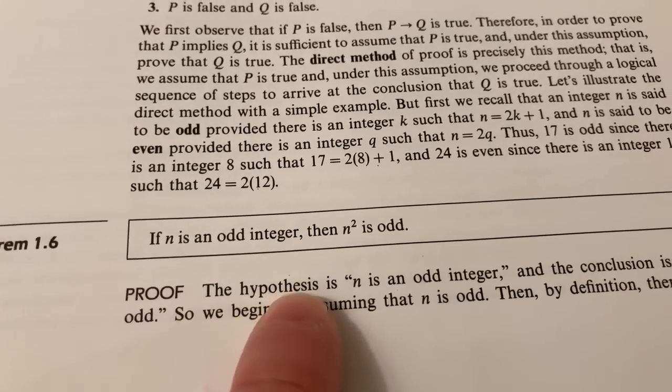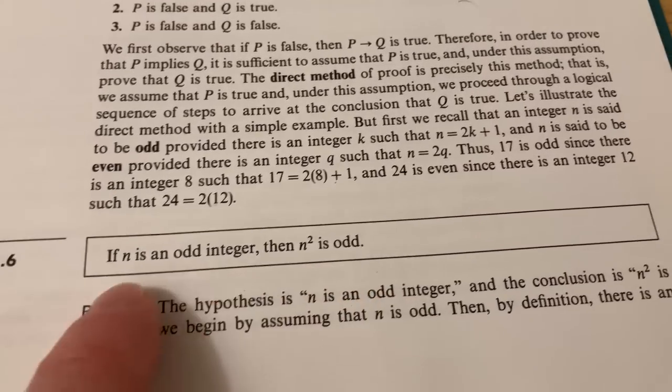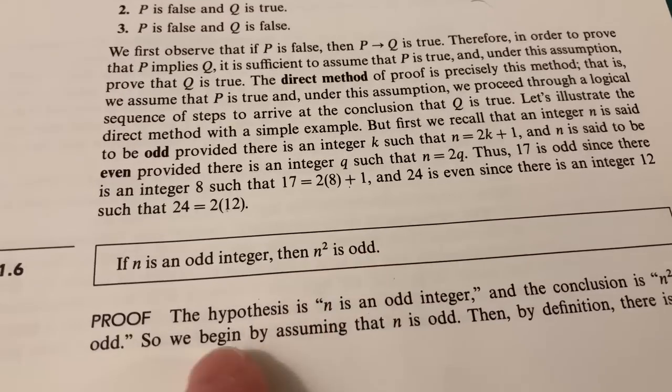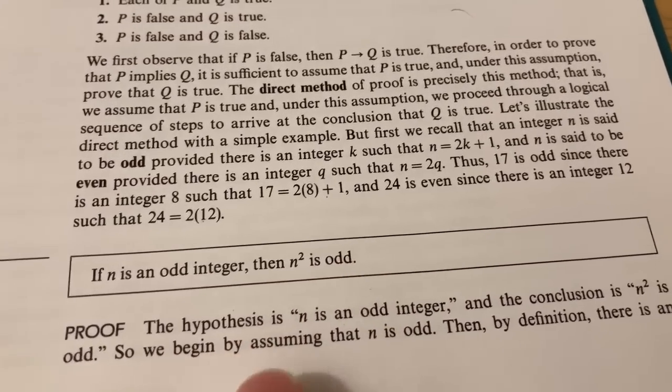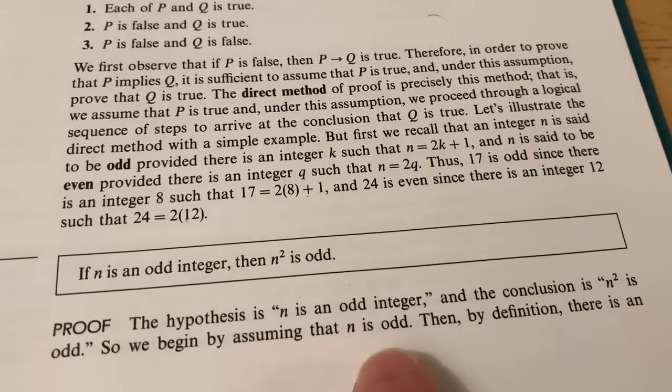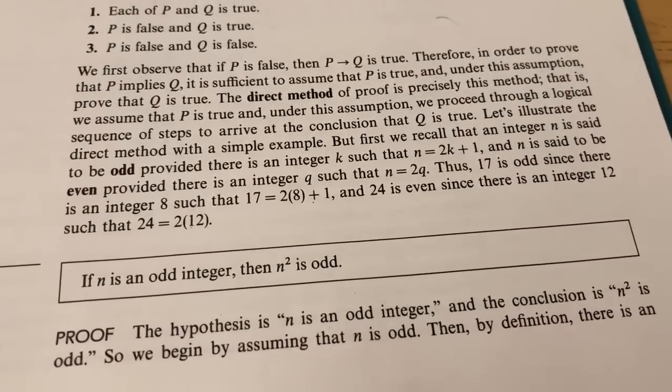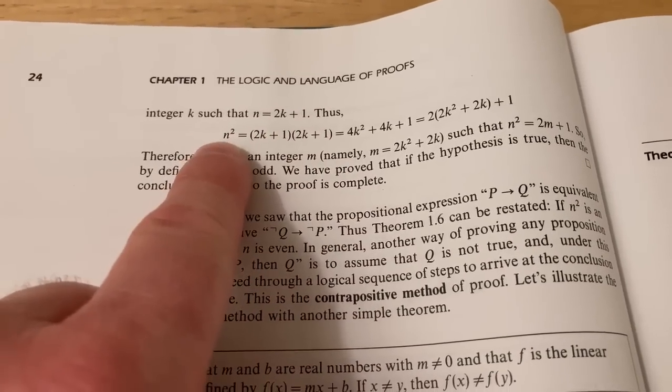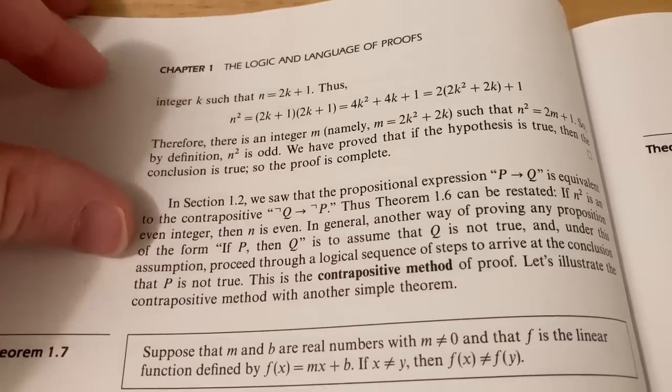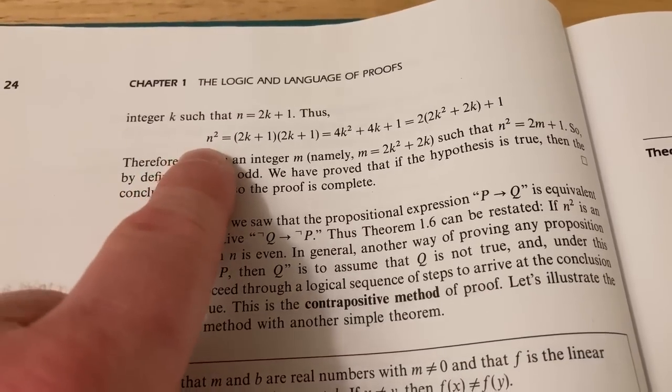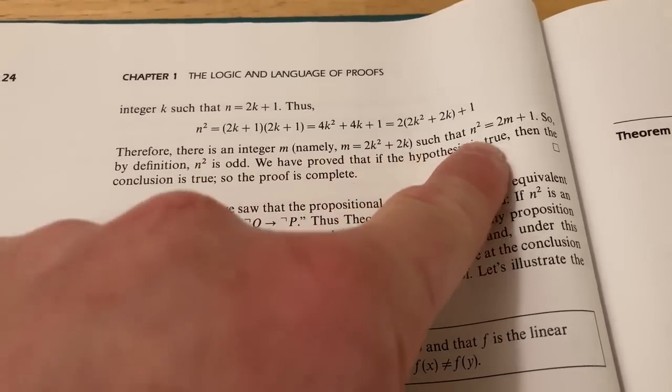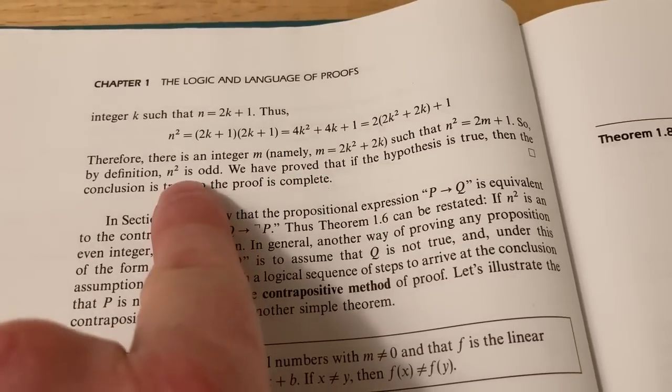It says proof. The hypothesis is n is an odd integer, that's this piece here, and the conclusion is n squared is odd, that's this piece here. So we begin by assuming that n is odd, so you actually have to write assume n is odd, or suppose n is odd. Then by definition, there is an integer k such that n is equal to 2k plus 1, and then you have to show that n squared is also odd. So basically, you just square it, look at the result, and then you end up with this.